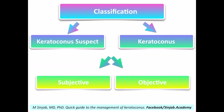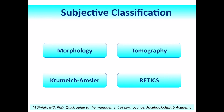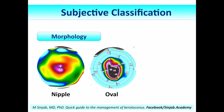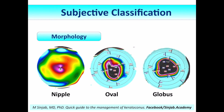Returning to the subjective and objective classifications: the subjective classifications can be based on morphology, tomography, the Amsler-Cromish, or the RETEX. Starting with morphology: morphologically, the cone can be nipple, oval, or globus. This classification is important for contact lens fitting.